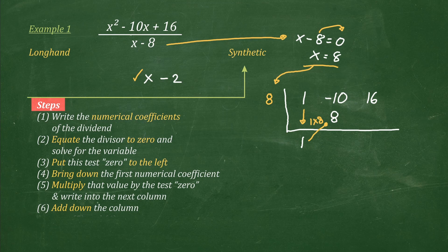Next step: add down the column. Meaning, negative 10 plus 8 is equal to negative 2. Notice that compared to longhand division, where you subtract and distribute the minus sign — where carelessness can occur — synthetic division uses addition instead. A much easier process. Next, we repeat steps 5 and 6. This value multiplied by the test zero: negative 2 times 8, which is negative 16. We got this by multiplying negative 2 times 8.